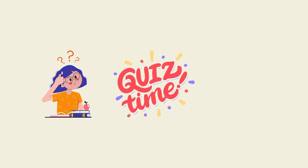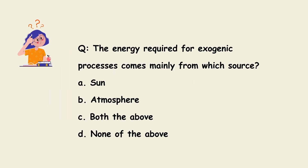Now let us check your knowledge with some quiz. The first question: the energy required for exogenic processes comes mainly from which source? A. Sun, B. Atmosphere, C. Both the above, D. None of the above. The answer for this question is C — both the above. The energy required for exogenic processes comes mainly from the sun and atmosphere.